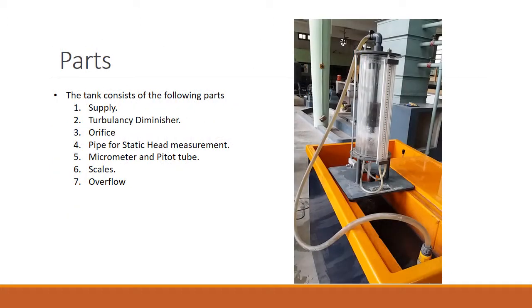This is the introduction of different parts of the apparatus that we are going to use. First of all, there is the supply from the hydraulic bench, from where water comes over from the sump tank. The next is the turbulence diminisher. As water from the sump tank comes at really high pressure, the turbulence diminisher finishes all related turbulence and therefore makes a really laminar flow.